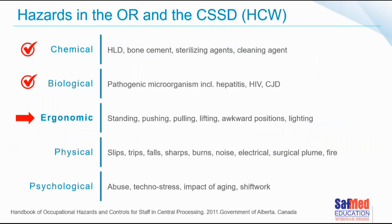If you want to talk about safety, it's very important to first start by understanding what the hazards are. Our chemical process handbook of occupational hazards and controls is really interesting. This particular one is focused on CSSD, but is of course relevant to all of us in the operating room and the CSSD environment. The hazards can be divided into different categories: chemical, biological, ergonomic, physical, and psychological hazards.